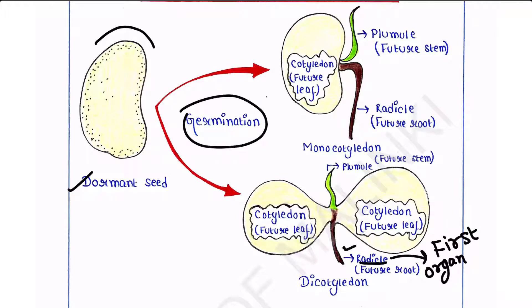This radicle grows downward into the soil and anchors the seedling. This embryo plant also has a part that will become the future stem and is called plumule. Cotyledon is the embryonic leaf, which is the first leaf to appear.